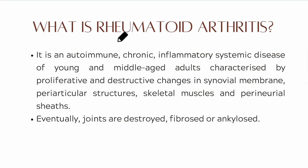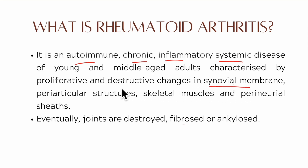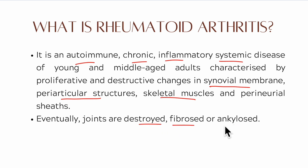To summarize the important points: rheumatoid arthritis is mainly an autoimmune, chronic, inflammatory, systemic disease of young and middle-aged adults, characterized by proliferative and destructive changes mainly in the synovial membrane, periarticular structures, skeletal muscles, and perineural sheets. Eventually these joints are destroyed, fibrosed, or ankylosed.